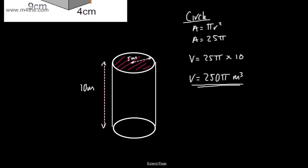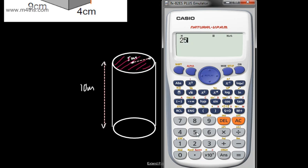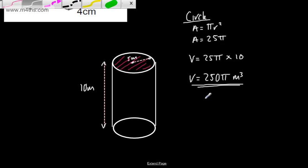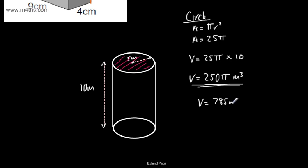If we wanted to round our answer using a calculator, we do 250 times pi. Pi is about 3.14, so we get approximately 785 meters cubed, given to the nearest meter cubed. So all we're doing is finding the area of the cross-section and multiplying it by the length.